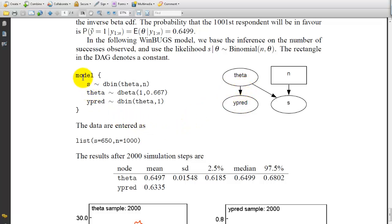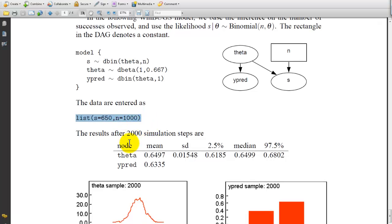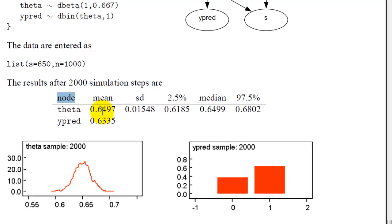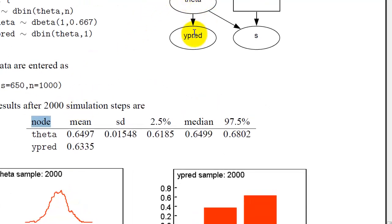So here's your WinBUGS model, and this is the data. This is how it's initially listed. And we're going to do 2,000 simulations and this is what we're looking for here. And so we have 2 nodes, theta and the y predict. So this is the distribution of the theta and this is the y predict.